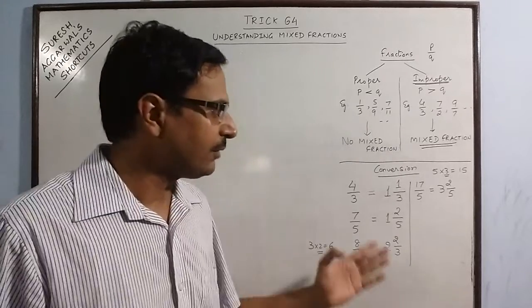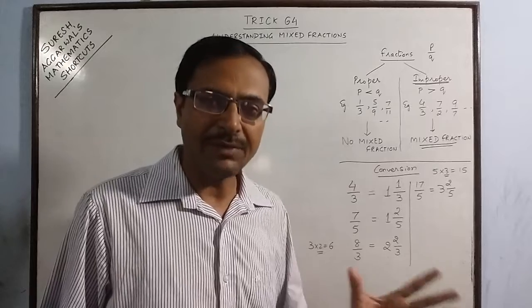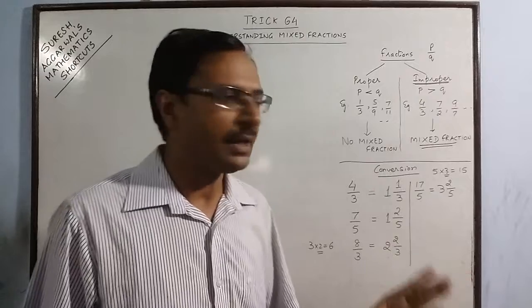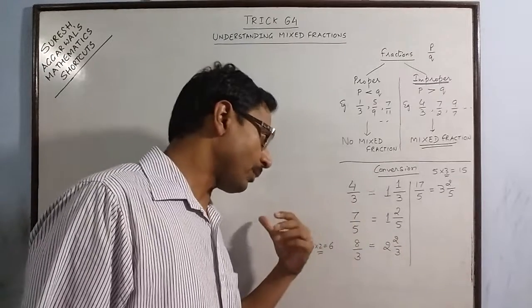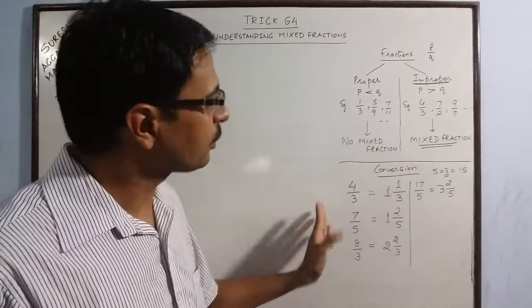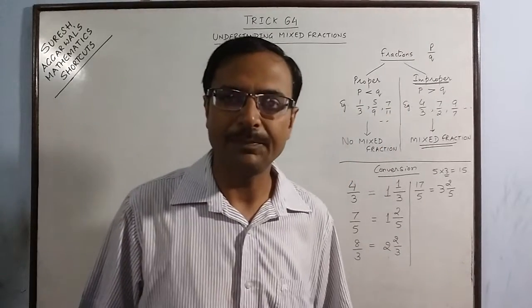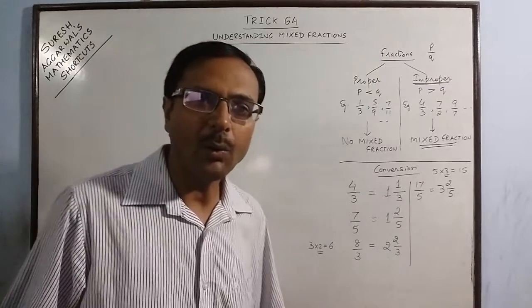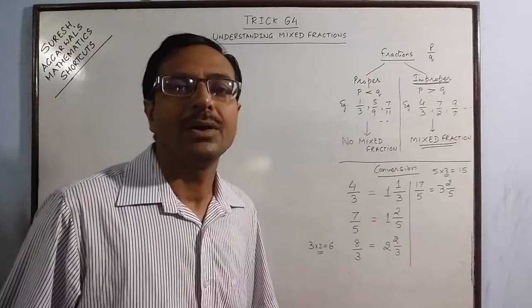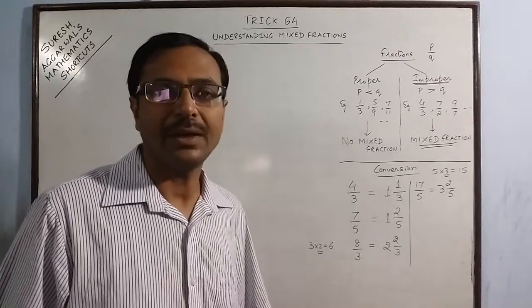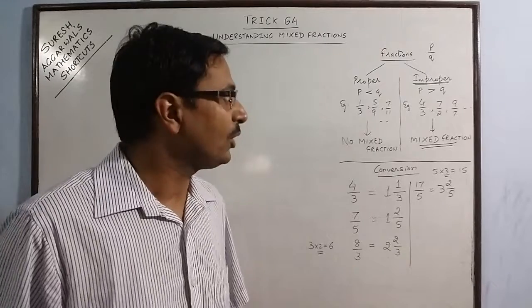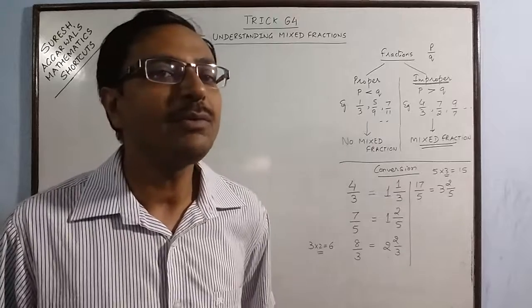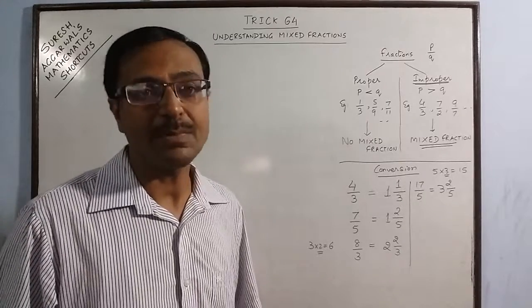Likewise, if you teach small children 10 or 15 examples of how this conversion is done, I think they can convert mixed fractions into improper and improper into mixed fractions very easily. Now, let us do some operations on mixed fractions. How we can teach children to get the exact accurate right answer when we add or subtract mixed fractions.